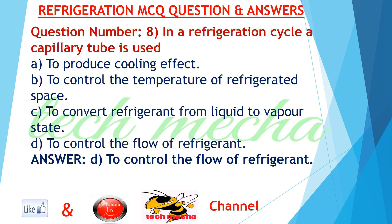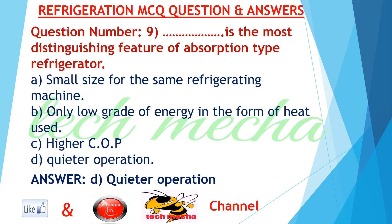Question number 8: In a refrigeration cycle, a capillary tube is used A. to produce cooling effect, B. to control the temperature of refrigerated space, C. to convert refrigerant from liquid to vapor state, D. to control the flow of refrigerant. Answer: D. to control the flow of refrigerant.